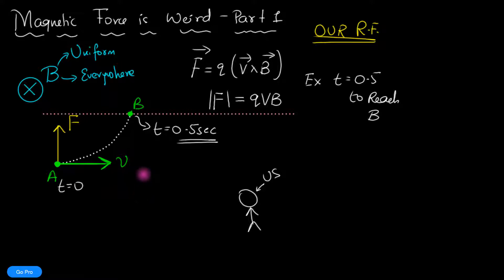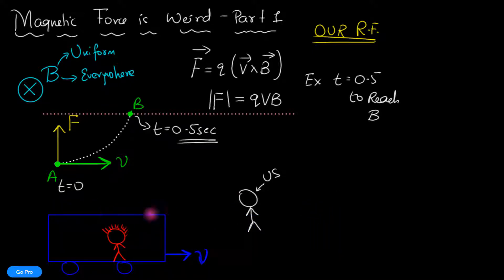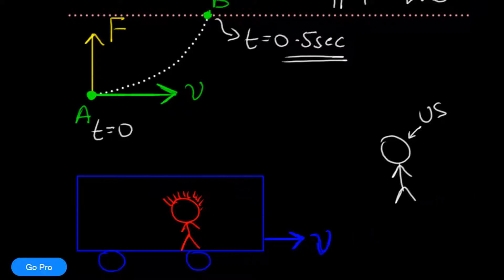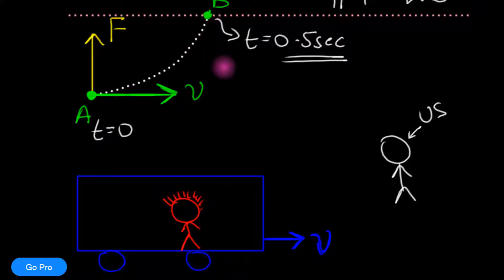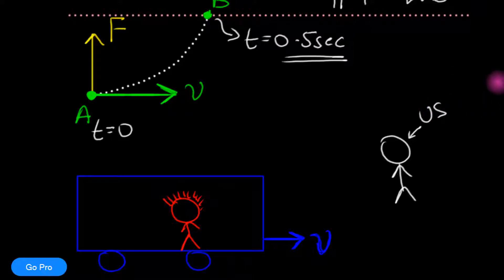Now the question is: what if we considered someone else's reference frame? Consider this dude over here. He is in a train or bus moving towards the right with velocity V, which is exactly the same as the velocity of the charged particle. If he were to calculate the force on the charged particle and how much time it takes to go from A to B, what would his answer be — 0.5 seconds or something different?